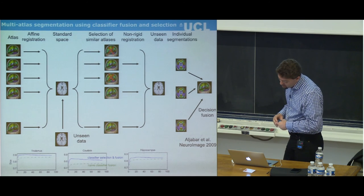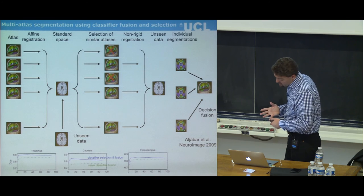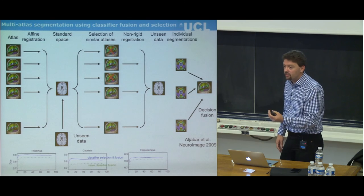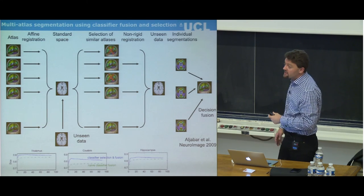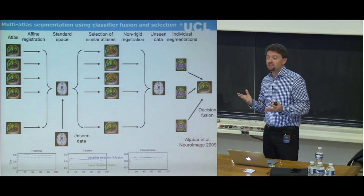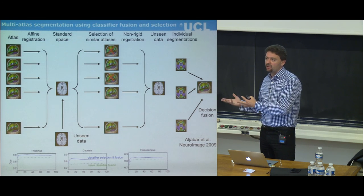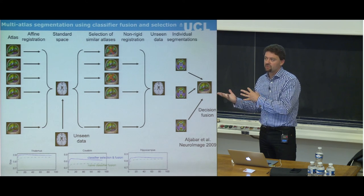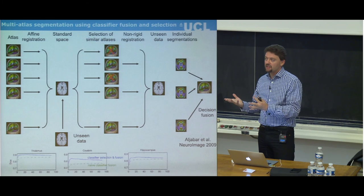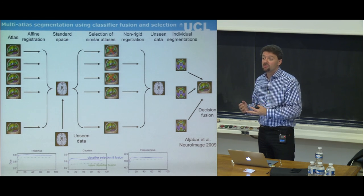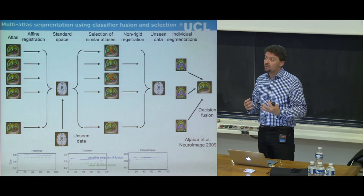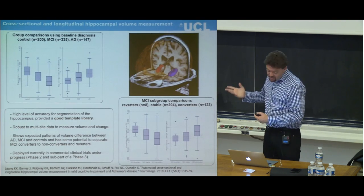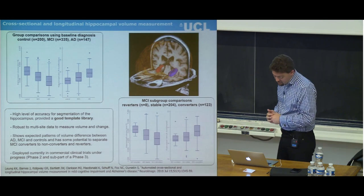Improvements to label fusion include using local rather than global correlation for template selection, and replacing binary decision fusion with statistical models such as maximum likelihood or expectation maximization techniques — for example, the STAPLE algorithm from Simon Warfield — to extract the ground truth from multiple segmentations. These techniques can be applied very successfully to structure segmentation.